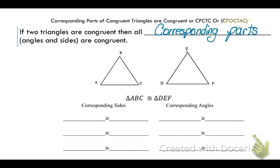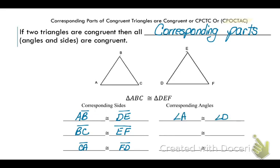In our two triangles, if we say they are congruent, we can say all corresponding sides are congruent: AB and DE, BC and EF, and CA and FD are all congruent. We can also say all corresponding angles are congruent: angle A and angle D, angle B and angle E, angle C and angle F.